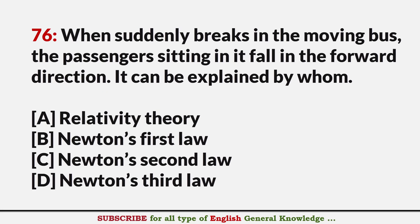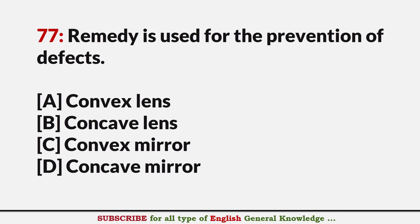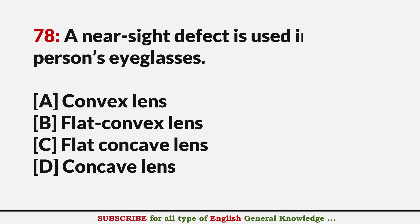When a moving bus suddenly brakes, passengers fall in the forward direction. This can be explained by? Answer B: Newton's first law. Which lens is used for the prevention of farsightedness? Answer A: Convex lens. Which lens is used in glasses for nearsightedness? Answer D: Concave lens.